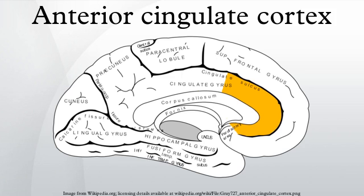The anterior cingulate cortex is the frontal part of the cingulate cortex that resembles a collar surrounding the frontal part of the corpus callosum. It consists of Brodmann areas 24, 32, and 33.